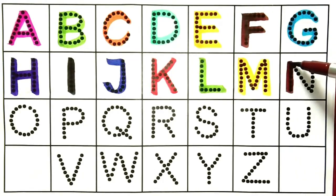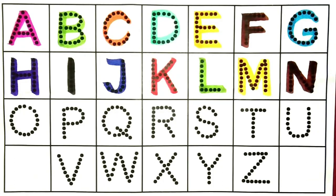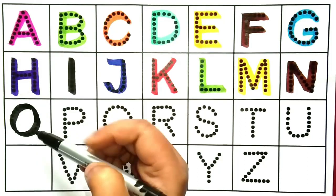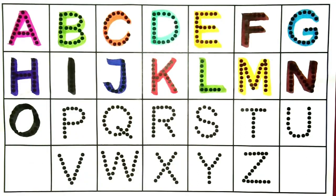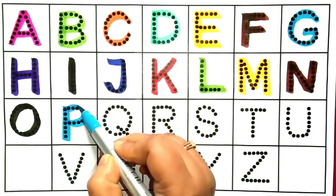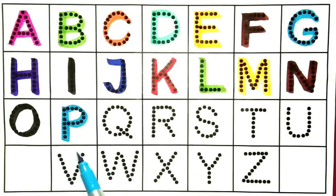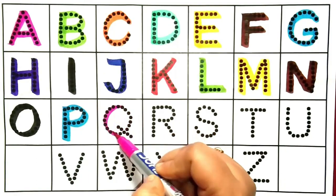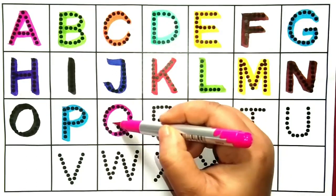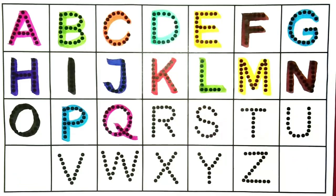N, N for nut, N for nut, N for nut, yeh hai N. O, O for owl, O for owl, yeh hai O. P, P for peacock, P for peacock, yeh hai P. Q, Q for queen, Q for queen, yeh hai Q.